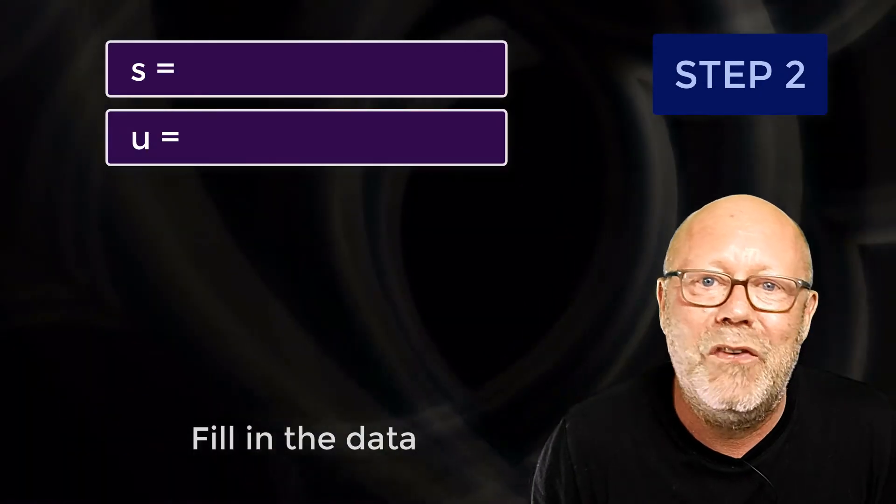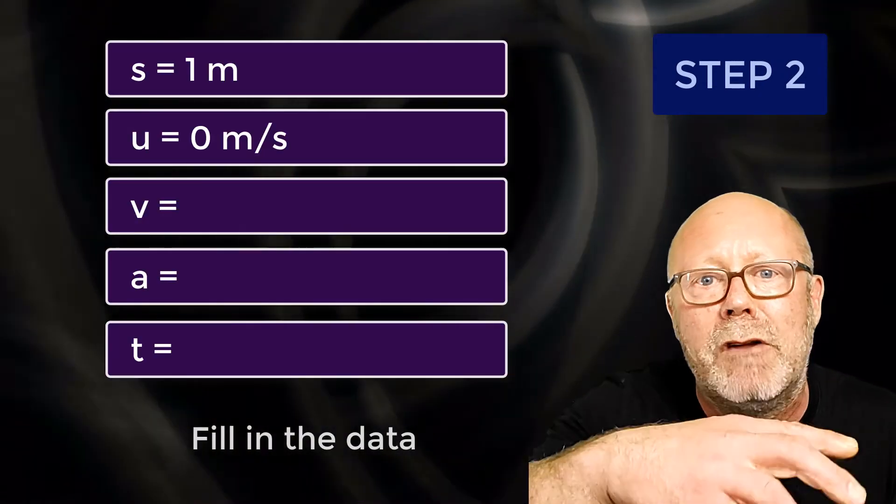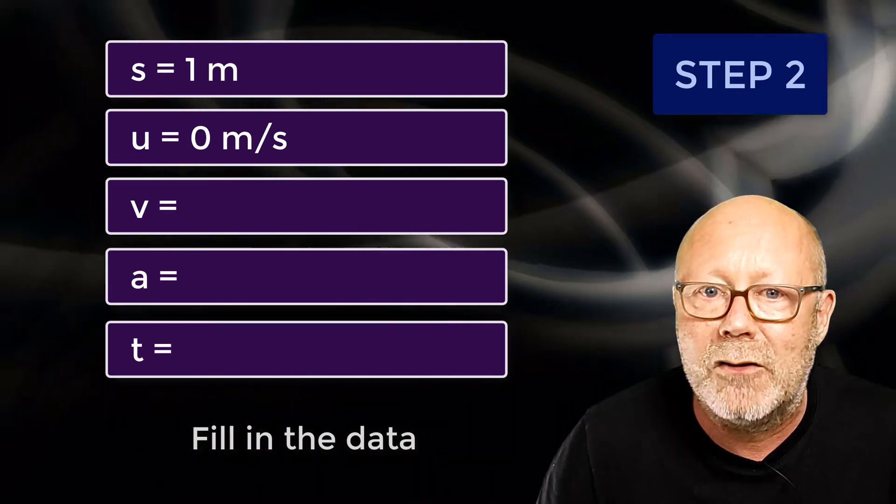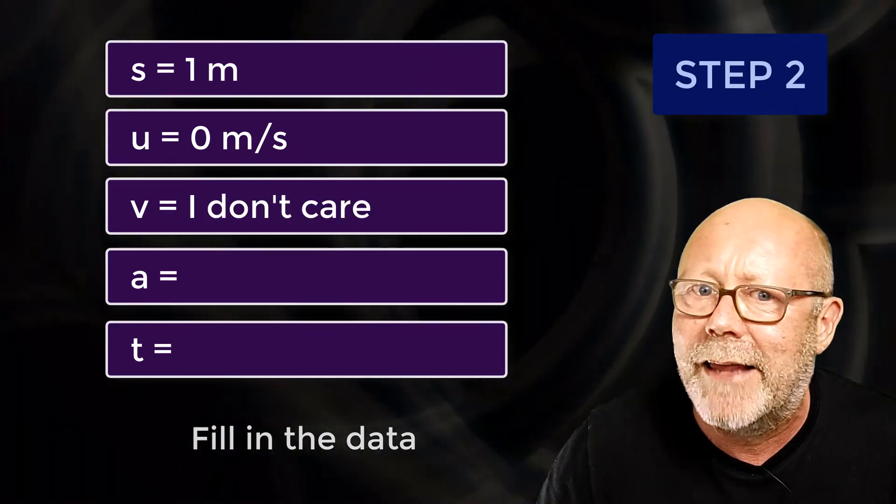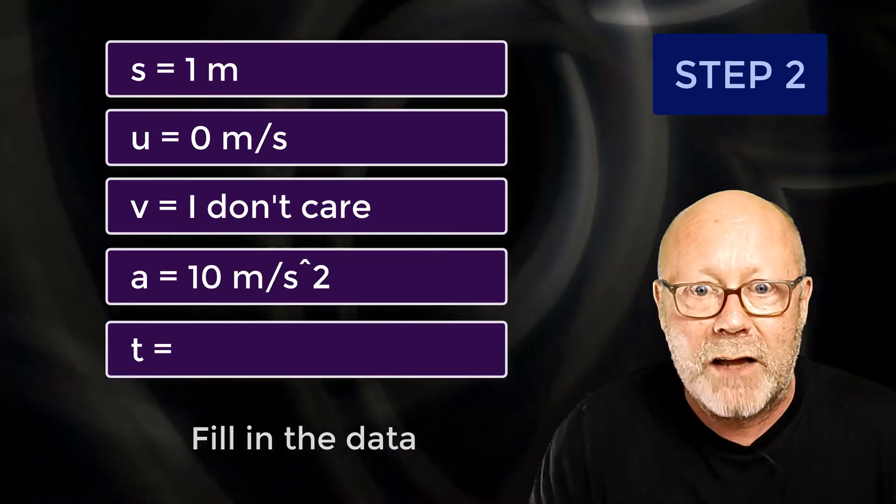Step 2. Fill in the S, U, V, A, T data. S will be 1 meter. U will be 0, because at the moment I release the object, it hasn't accelerated yet. V, the final velocity. I don't know. And I don't care. A will be the acceleration, acceleration due to gravity. And finally, T is the time, is what I'm looking for.